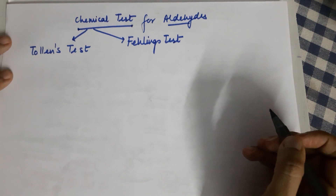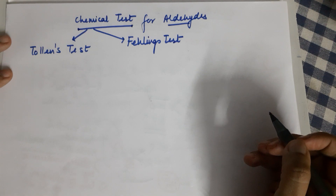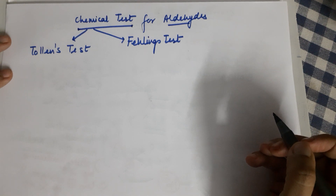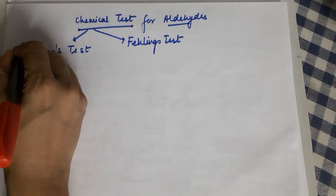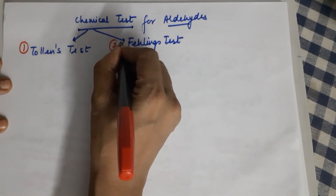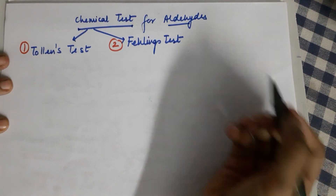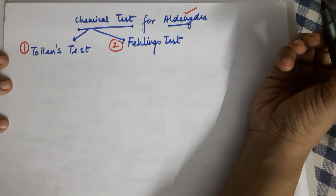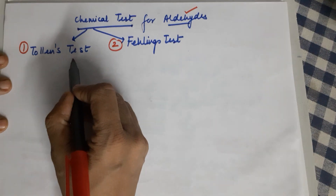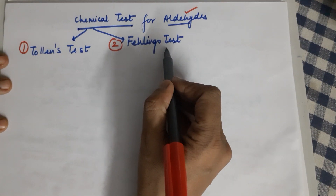Good morning class 12th. Welcome to the channel by Seema Makhijani. We'll be doing tests for aldehydes. In your CBSE class 12th syllabus we have two important chemical tests: the Tollens test and the Fehling test. Both of them are applicable for aldehydes, which means you can identify an aldehyde by using the Tollens reagent or by using the Fehling solution.